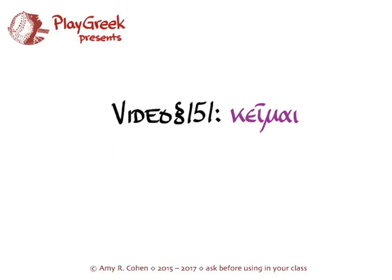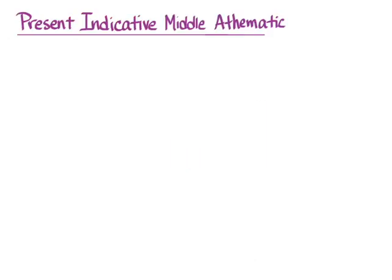In section 151 of Hanson and Quinn's Greek Intensive Course, we learn about the verb κεῖμαι. Hanson and Quinn gives it to you on pages 568 and 569. This is the last μι verb, the last athematic verb I get to introduce you to.